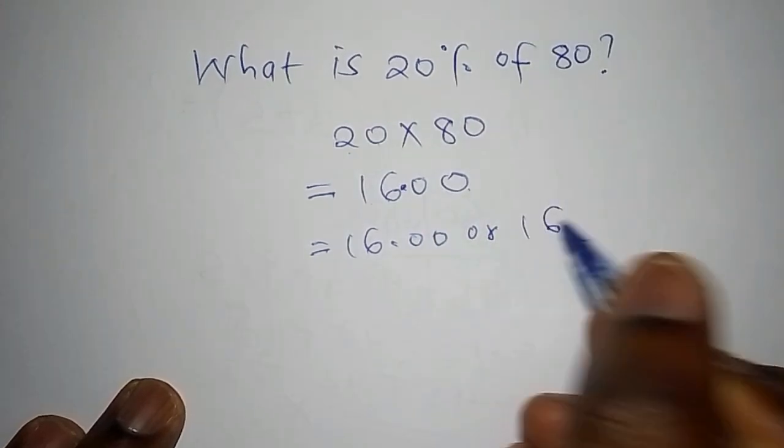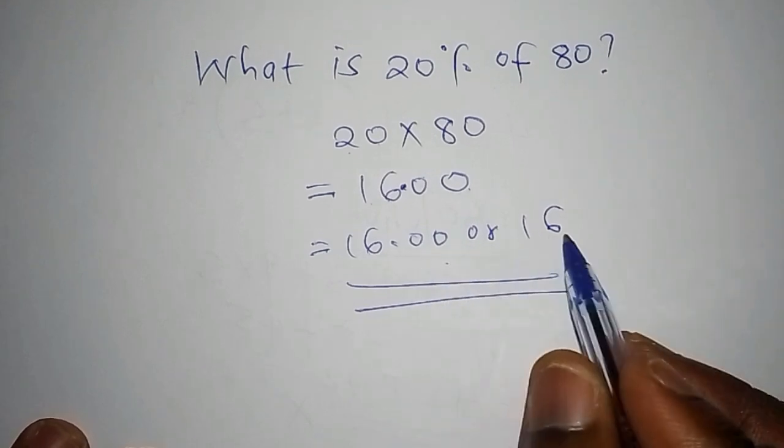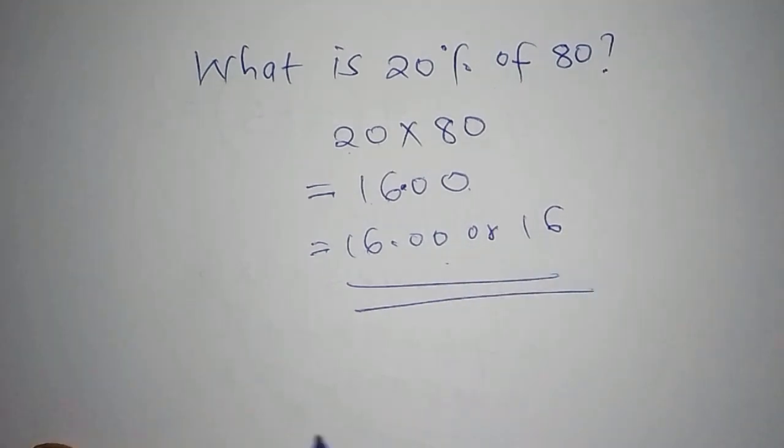You can say the answer is 16.00 or the answer is 16. So now our correct answer becomes 16.00 or 16. This is the easiest way of working out percentages.